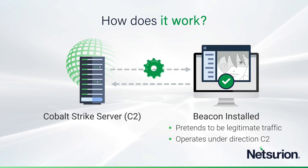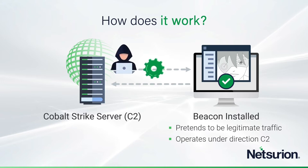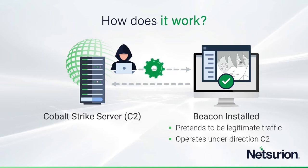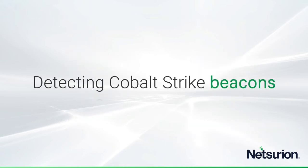As shown previously, it's got a ton of functionality so the attacker can make it do all kinds of things to your endpoint. So if you have in fact been infected by a Cobalt Strike beacon on some of your endpoints, how on earth would you actually detect this? It's actually quite difficult.